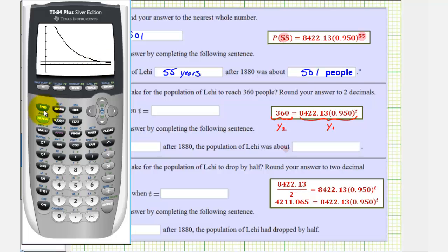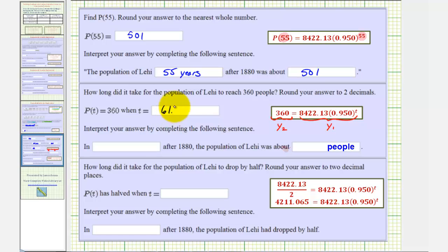To find this point of intersection, we'll press second trace for calculate, and then option five for intersection. Because we only have two curves or two graphs on the coordinate plane, we can press enter three times. Notice how the x-coordinate is approximately 61.46, which would be the value of t when the population is 360. Which means in 61.46 years, the population of Lehi was about 360 people.